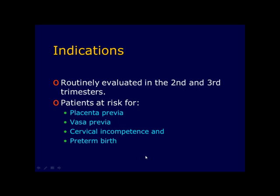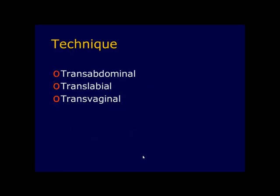The cervix should be routinely evaluated in the second and third trimester of pregnancy, especially in patients at risk for placenta previa, vasa previa, cervical incompetence, and preterm birth. Cervical length is measured from the internal os to the external os. The cervix is evaluated for shortening and dilatation, and the relationship of the cervical edge of the placenta to the internal os is determined.